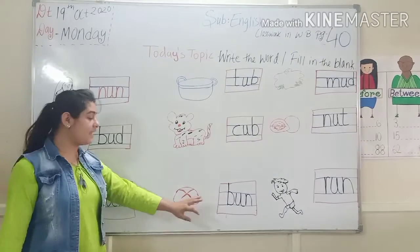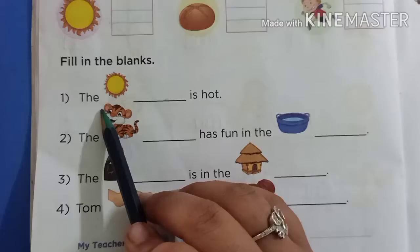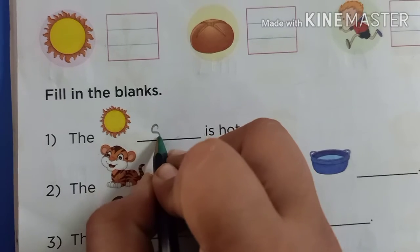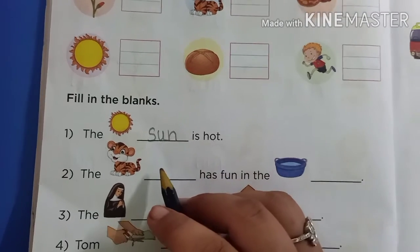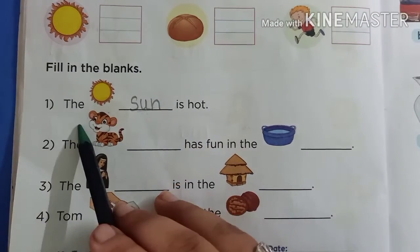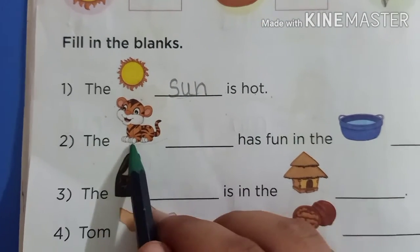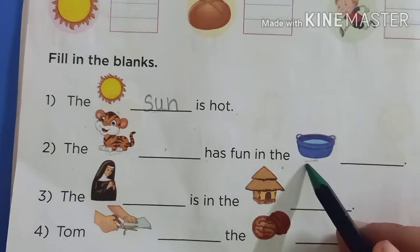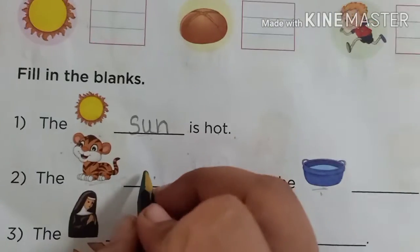So kids, are you completed with me? You completed the first topic: look at the picture and write the words. Now let's do 'Fill in the Blanks.' Write with me — fill in the blanks. 'The sun is hot.' Spelling of sun: S-U-N. Sun. Kids, write along with me. The picture gives us a clue for how to complete the fill in the blanks. The sun is hot. The cup — kids, what is the picture? Yes, cup. The cup has fun in the tub. Here we write cup.